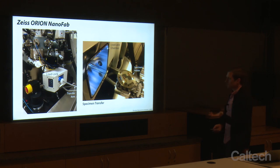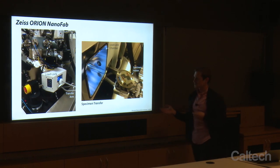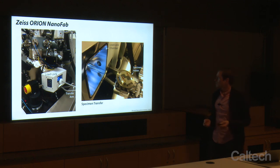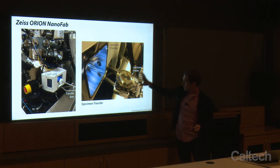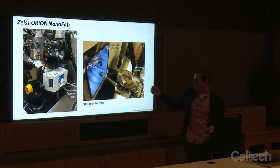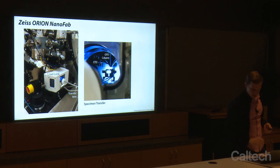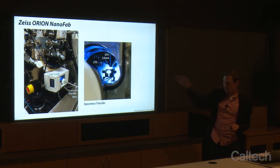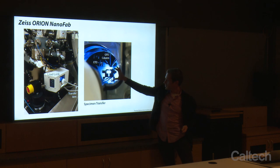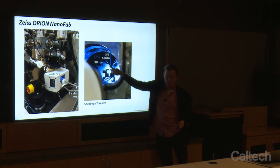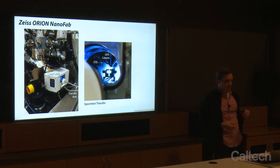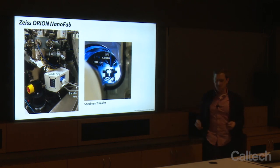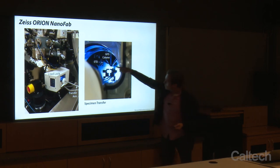We have a load lock that allows us to transfer a sample in about two minutes. Here's what it looks like when we pull the sample out — a specimen holder with a stub with a couple of chips. With the gate valve open, our transfer arm puts the holder onto the stage. Here's our GFIS column, our Everhart-Thornley detector — familiar from SEM and gallium FIB — and behind it is our gallium-focused ion beam column.